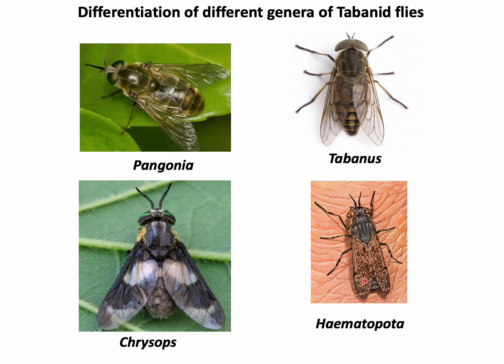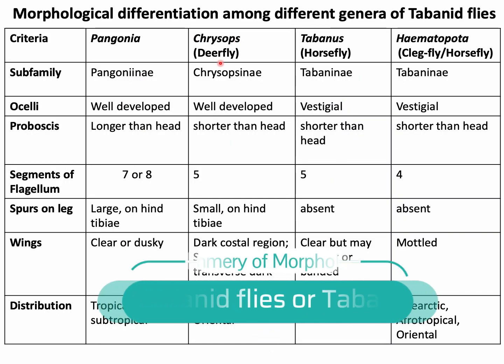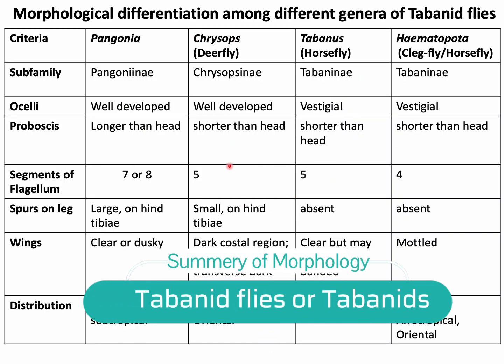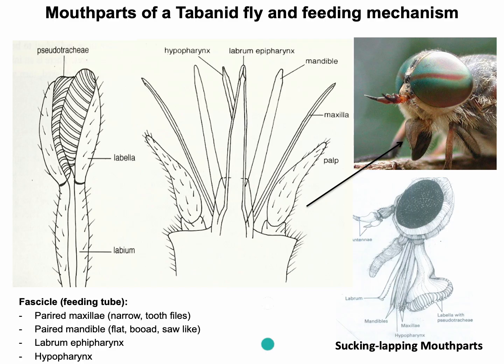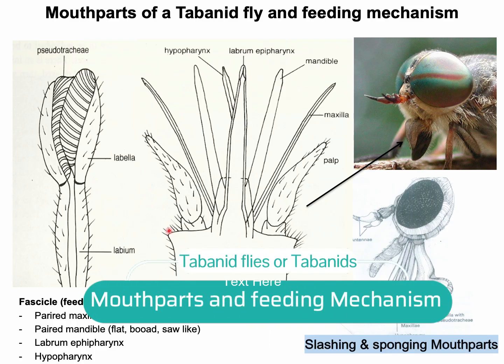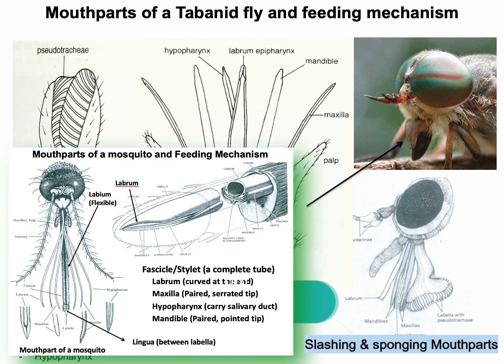Wing coloration — mottled wing — is seen in Haematopota. This is the summary of the morphological differentiation already discussed.